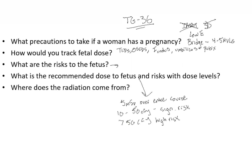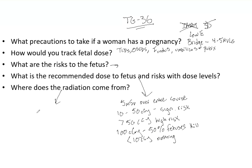Earlier in pregnancy is more dangerous because cells are replicating faster and are unspecialized — referencing the law of Bergonié and Tribondeau. Radiation in the first trimester is most detrimental. At 100 centigrays (one gray), approximately 50% of fetuses will not survive, so preventing that level is critical. Below 10 centigrays, for the most part, nothing significant happens — that is the ideal range to target.